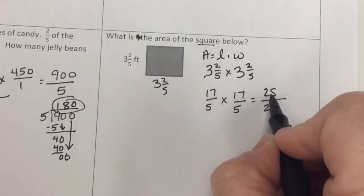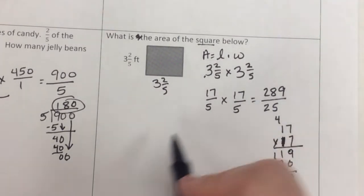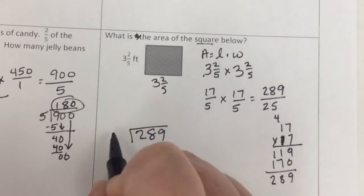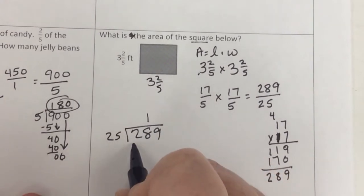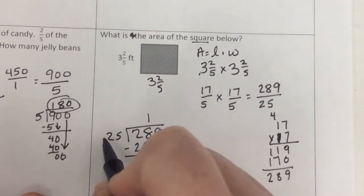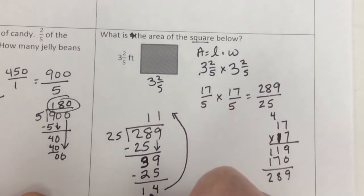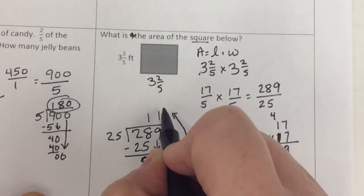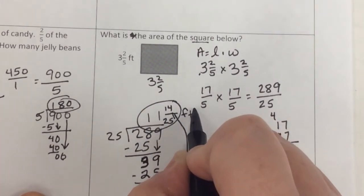So 289. Now that's improper, so I can't leave it that way. So what I'm going to do is divide 289 divided by 25. 25 goes into 28 one time, and I get a 25. A 4. Oh, that's so, oh, sorry. 3 and 9. 25 times 1 is 25, and I subtract and get 14. But I can't leave it, so I don't just put that remainder after the decimal. It's my mixed number. 11 and 14/25 feet squared.